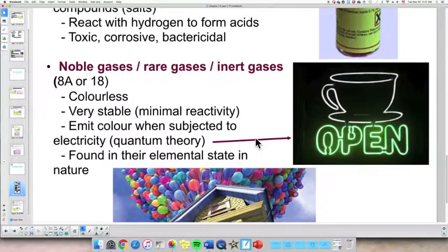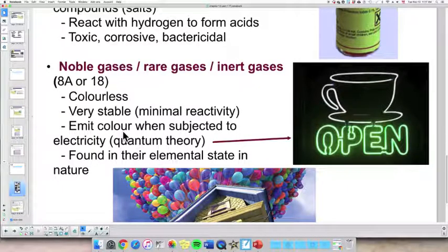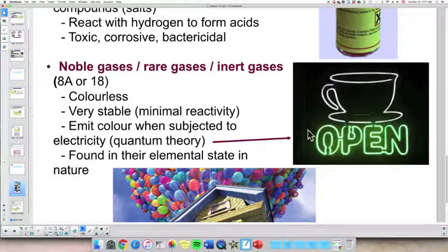Now, one way that we can make them quote-unquote react, they won't react with another substance, but if we do zap them with electricity, they will emit color. What happens is their electrons get excited. They jump from one orbit to another, or they leave and they come back. And by doing so, they emit light, which is colored. Now, in a subsequent video, I will explain the quantum theory a little bit more, but that's, in summary, what they do. And if you think of neon lights, they are colored.